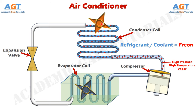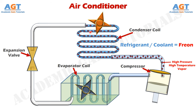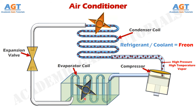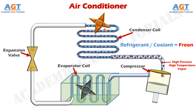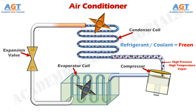As the heat leaves the refrigerant to the outside environment, it turns back into a liquid. We can think of it as the opposite of the evaporator coil, because the evaporator coils contain cold refrigerant, whereas the condenser coils contain hot refrigerant. Now, this high temperature condensed liquid refrigerant will leave the condenser and enter the expansion valve through this connecting pipe.